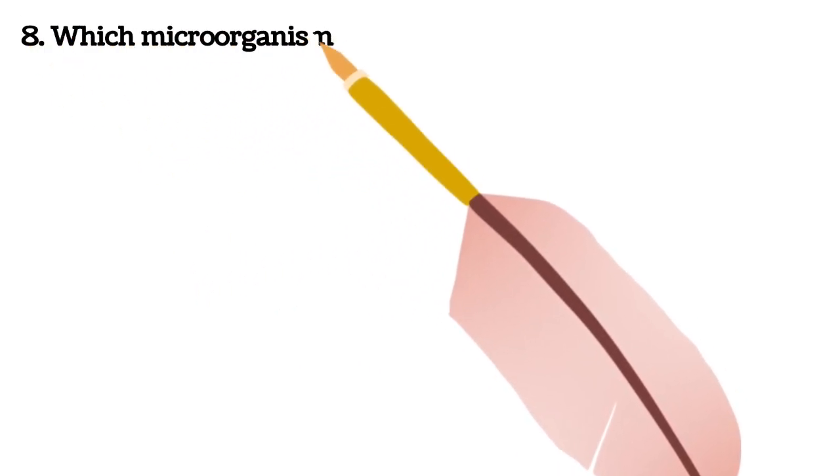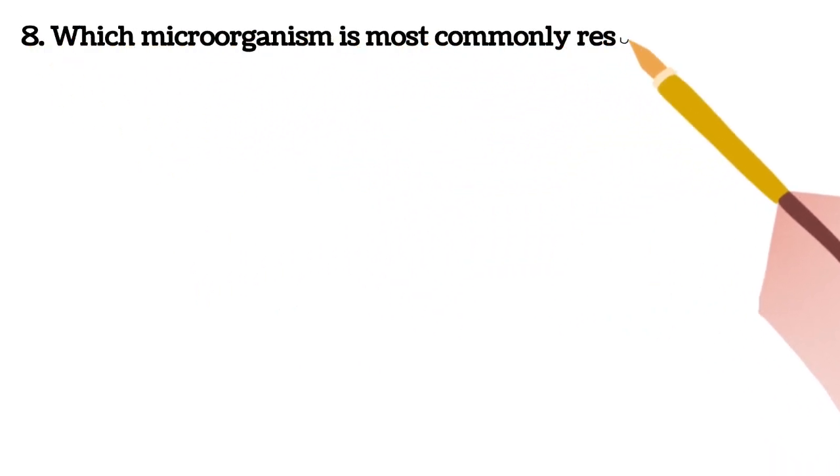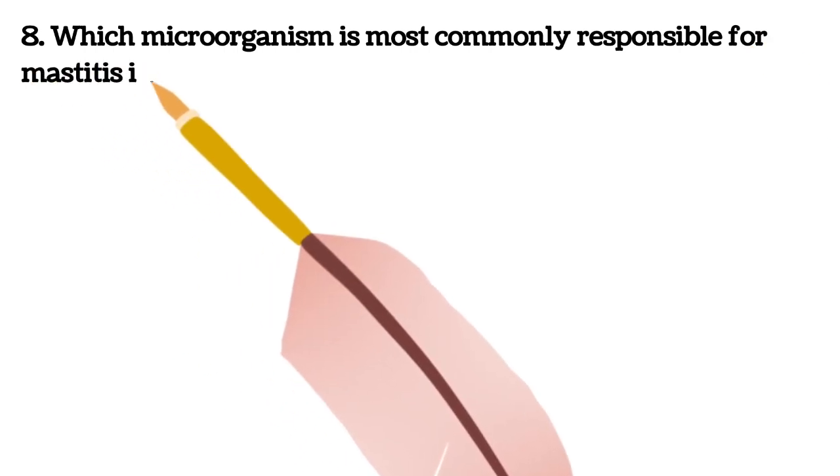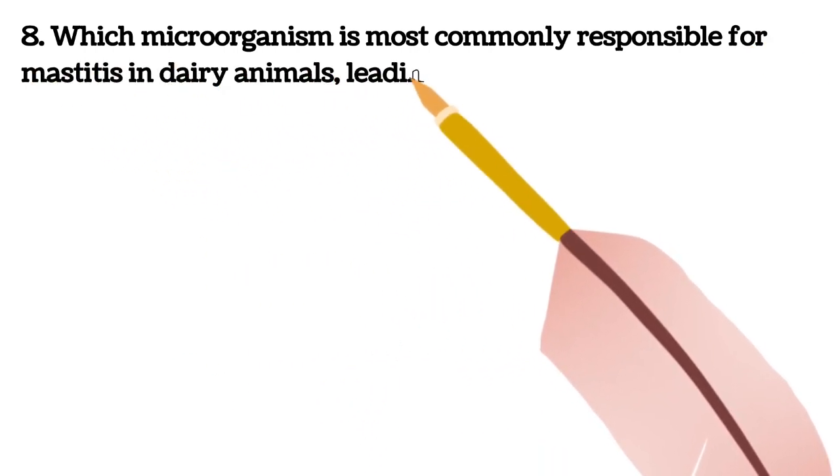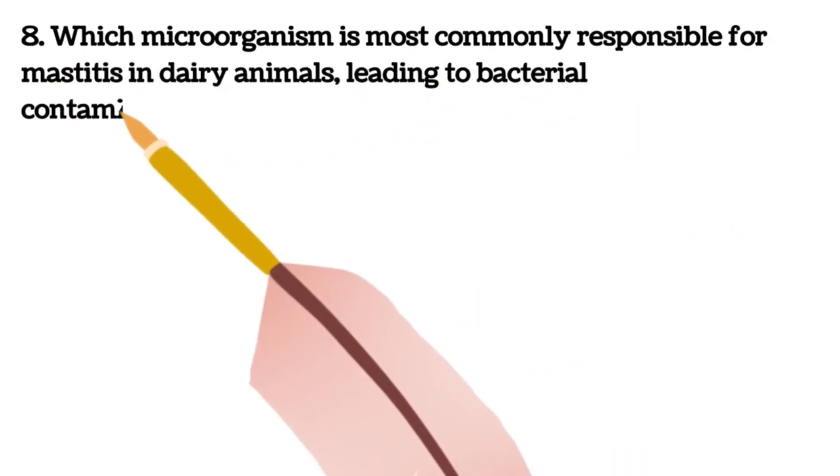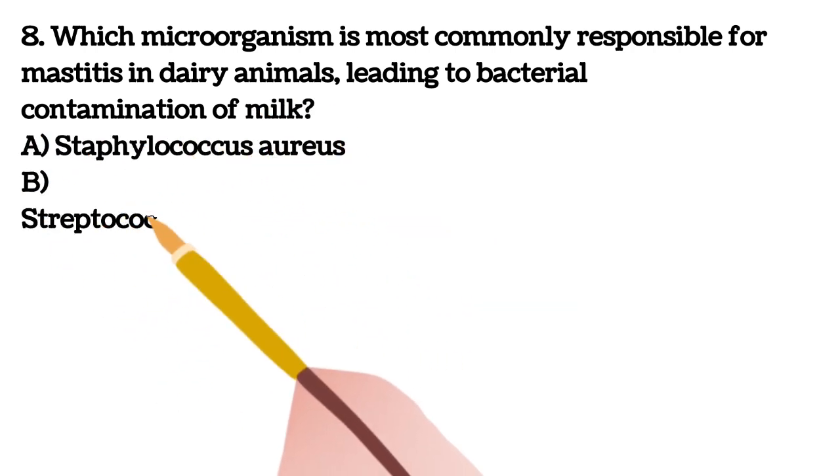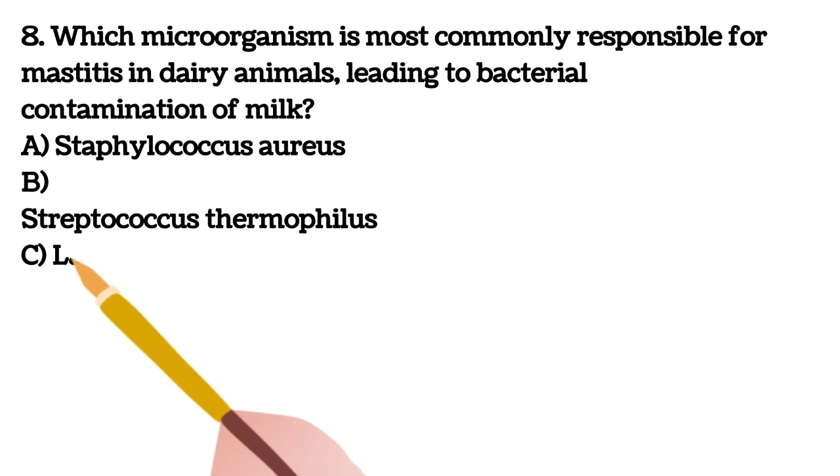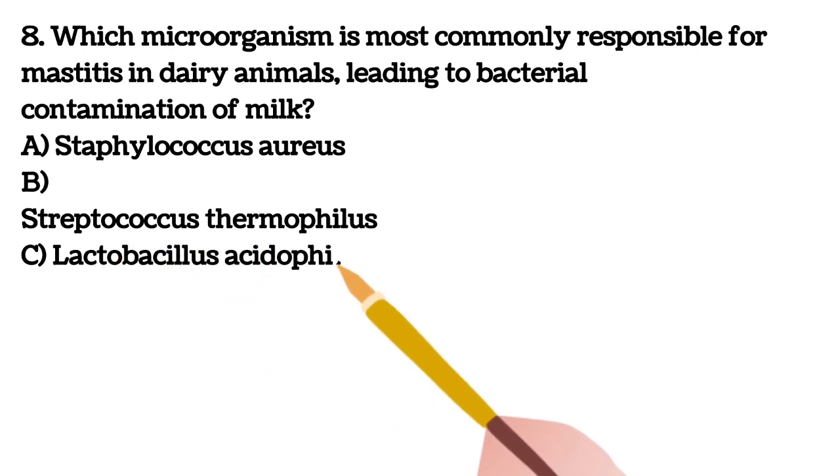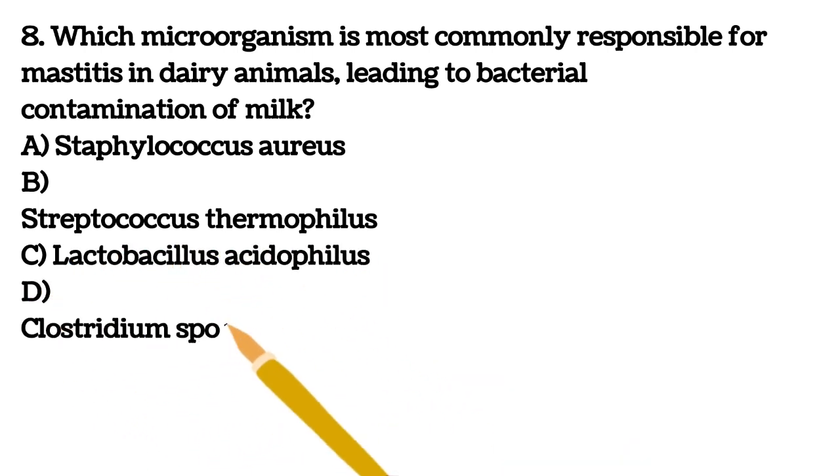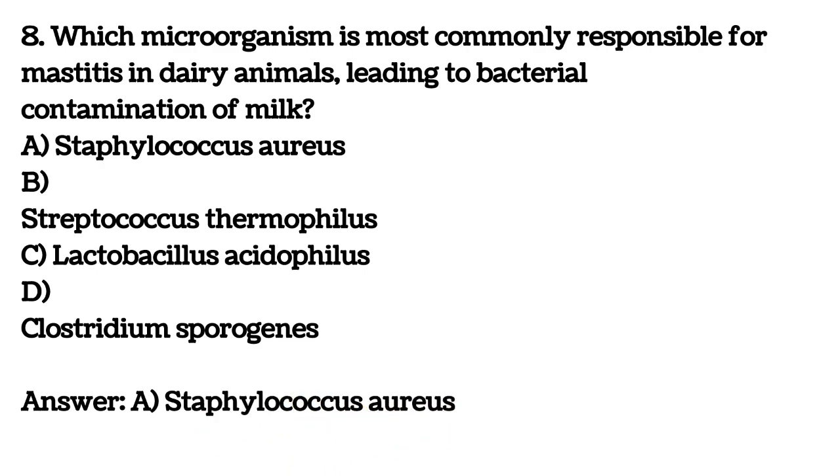Eighth question. Which microorganism is most commonly responsible for mastitis in dairy animals leading to bacterial contamination of milk? A. Staphylococcus aureus B. Streptococcus thermophilus C. Lactobacillus acidophilus D. Clostridium sporogenes. Your answer is A, Staphylococcus aureus.